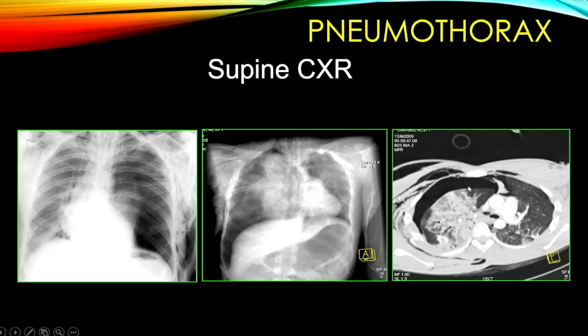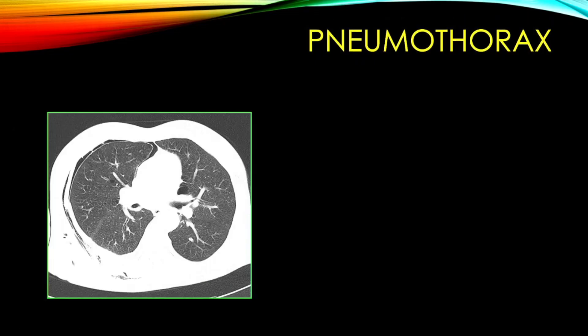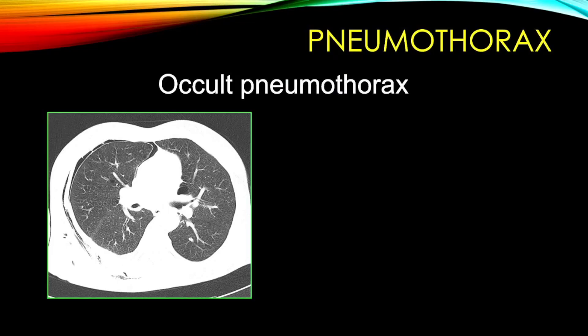Once it reaches the CT scan, it's easy to pick up pneumothorax and most of the time we have an ICD in situ before the patient reaches. But sometimes when you detect a pneumothorax on CT — a very small amount that may not have been picked up on eFAST or chest x-ray earlier — by definition it becomes an occult pneumothorax because you're picking it up only on CT scan. Is this significant? Does it require management?